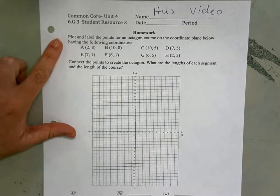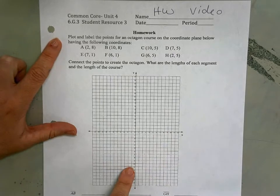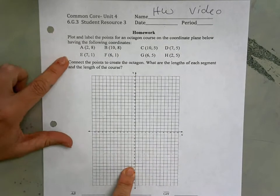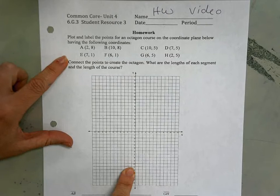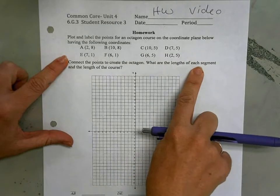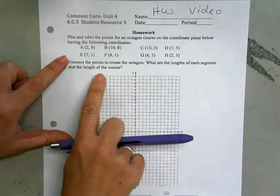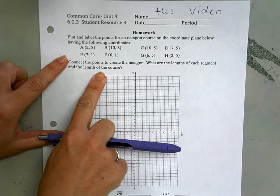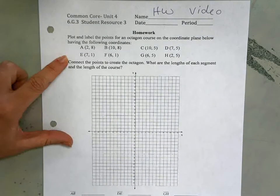So directions do ask you to plot and label the points for this octagon on the coordinate plane, and then connect the points to create the octagon. We're going to find the length of each segment, and then the length of the whole octagon. And I'm going to start that with you.